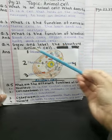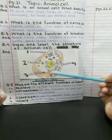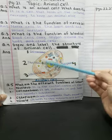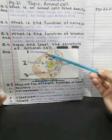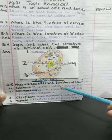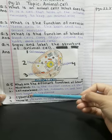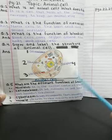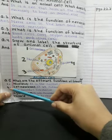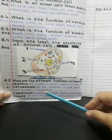You need to draw and label the structure of the animal cell — this is your home task. Draw the cell membrane, nucleus, vacuole, and cytoplasm. Question 5 asks for the different functions of each part. The nucleus is the control center of the cell. The cell membrane lets nutrients in and keeps out harmful substances.